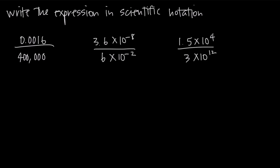In this video we're talking about division of scientific notation and we've got a couple of examples here. The first one is 0.0016 divided by 400,000. We need to realize that we have a number in the numerator and a number in the denominator, both of which can be written in scientific notation. We want to write both of them in scientific notation first and then simplify the division.